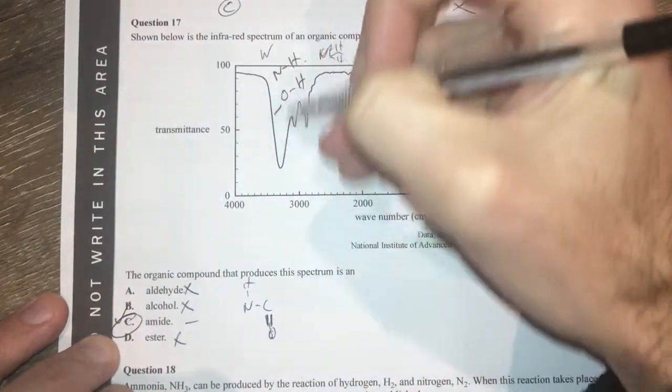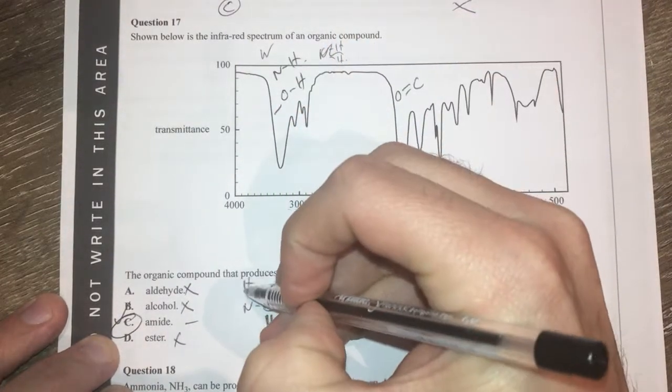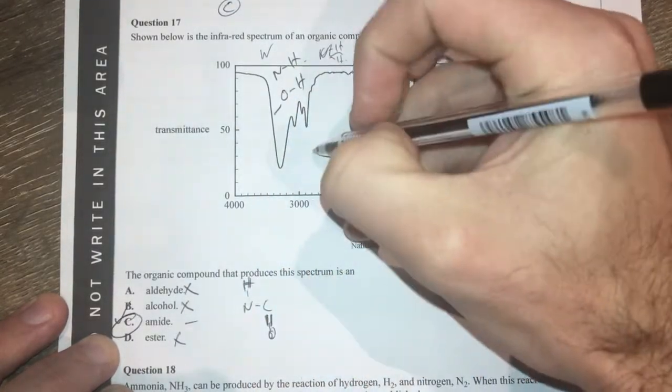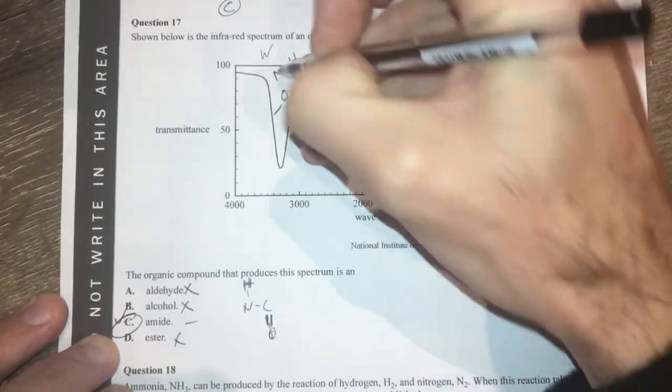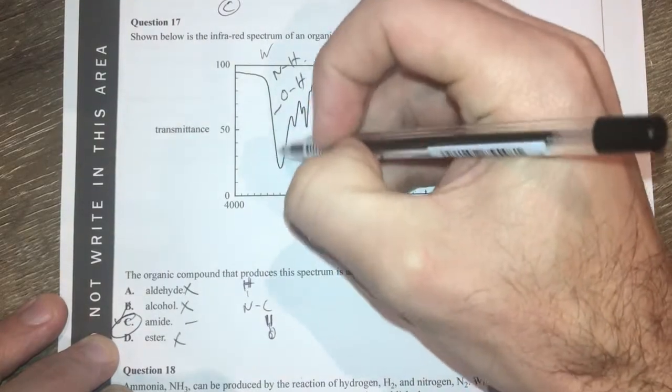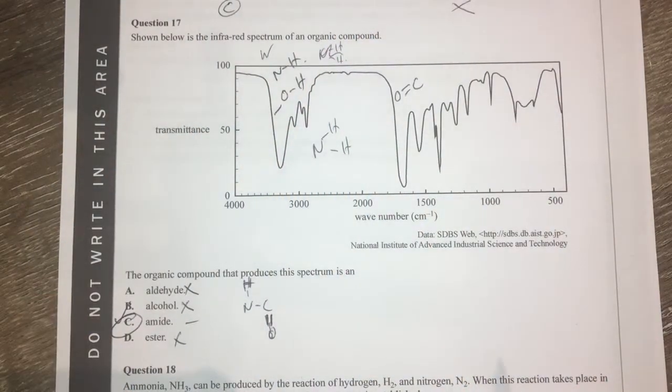You've got one main peak here I'm guessing because you've only got the one nitrogen to hydrogen. As I said, we'd normally have an amine group which would have your two little fangs coming up here. But that's kind of where that comes from.